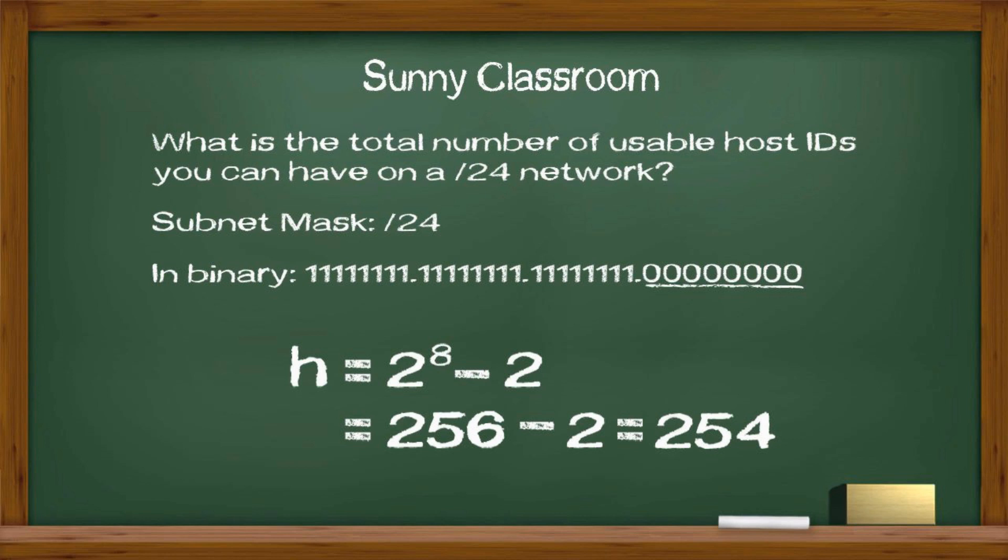Let me explain. 2 to the 8th power, 256, is the total number of IDs on a slash 24 network. However, the first ID is reserved for the network ID, a unique identifier for a certain network. Any network has a network ID.